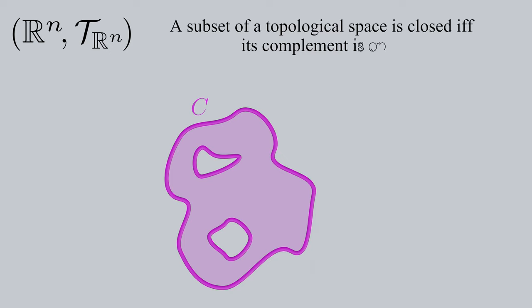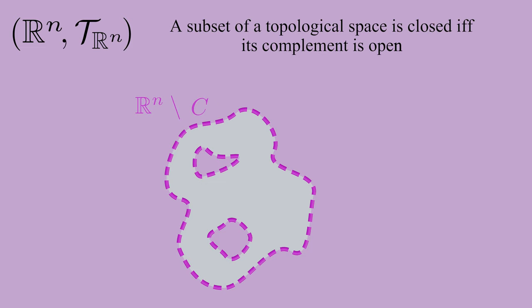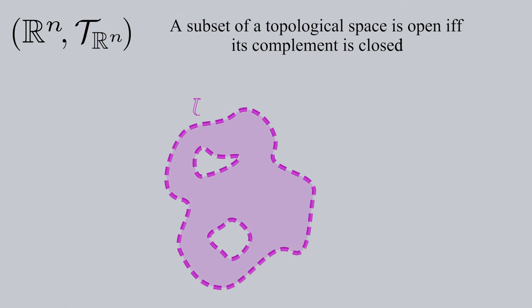Now that we have an understanding of these open and closed sets, I'll mention that a subset of a topological space is closed if and only if its complement is open. And this is where the complement is every point of the ambient topological space except for the closed set itself. Likewise, a subset of a topological space is open if and only if its complement is closed.